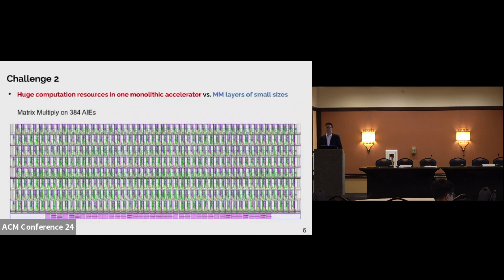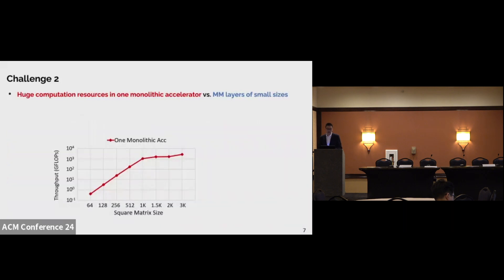To show the real onboard implementation result, we map the matrix multiply on 384 AIE engines with over 80% utilization of the on-chip buffers, including BRAM and URAM. The onboard implementation shows that when the matrix size is large, for example at point A, by exploring the on-chip data reuse, we can achieve 2,800 gigaflops throughput. However, at point B, because of the shape mismatch between the huge computation resource and the matrix size, we only achieve 0.4 gigaflops.